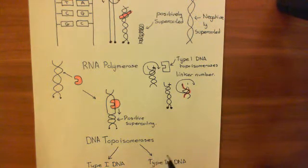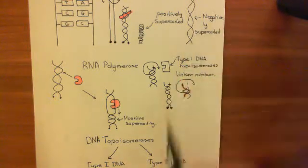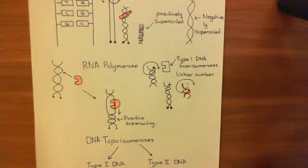And you can even have topoisomerases which do the opposite, i.e. they add coils in, i.e. their linker number is positive. They're going to add coils in, and that will be necessary if you're negatively supercoiled.